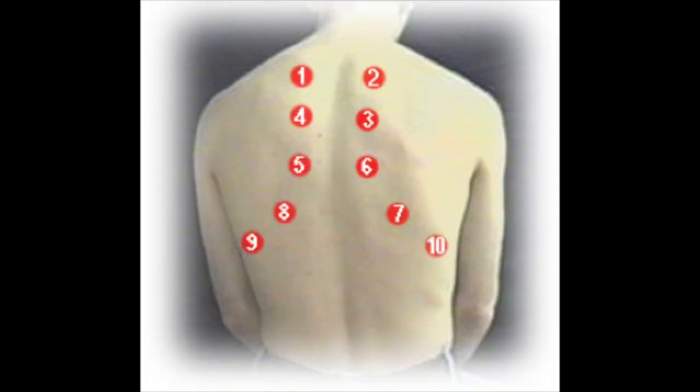There are ten points along the posterior side that you're going to want to assess, starting at the apex at the top of the back, and ending at the inferior angle of the scapula, while avoiding the bone itself.